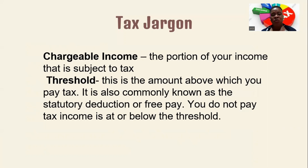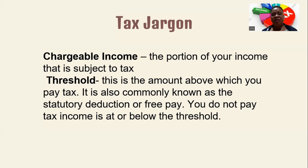The threshold is the amount above which you pay tax. If the threshold is $20,000, then anything above that will be subject to tax. On the first $20,000, you pay no tax, but you pay tax on the balance — for example, $60,000. The threshold is also commonly known as a statutory deduction or free pay, and you do not pay tax on income at or below the threshold.